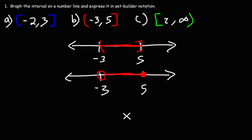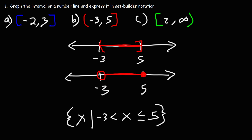Now, x is less than or equal to 5 — it includes 5 — but it does not include negative 3, so it's simply greater than but not equal to negative 3. And that's how we can put it in set builder notation. This is the answer in set builder notation.